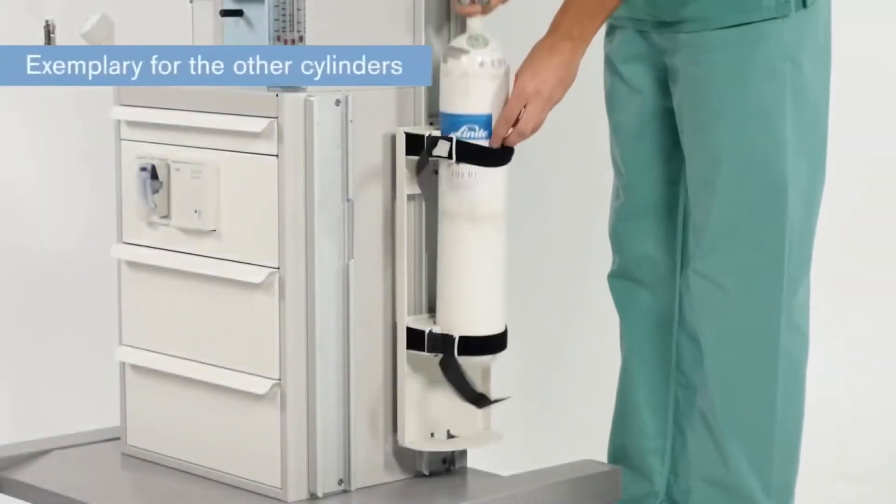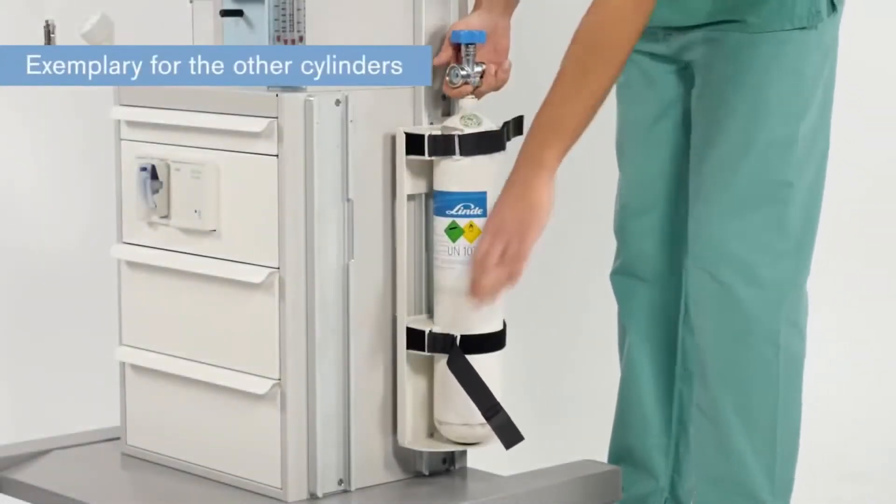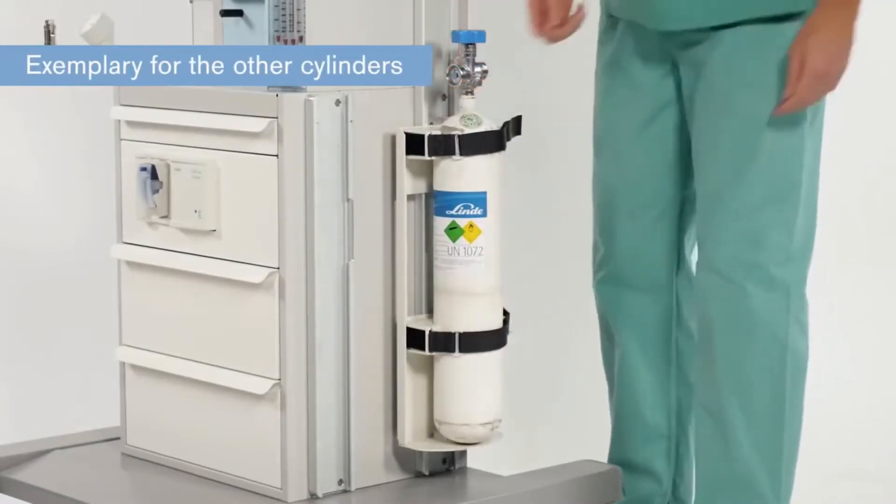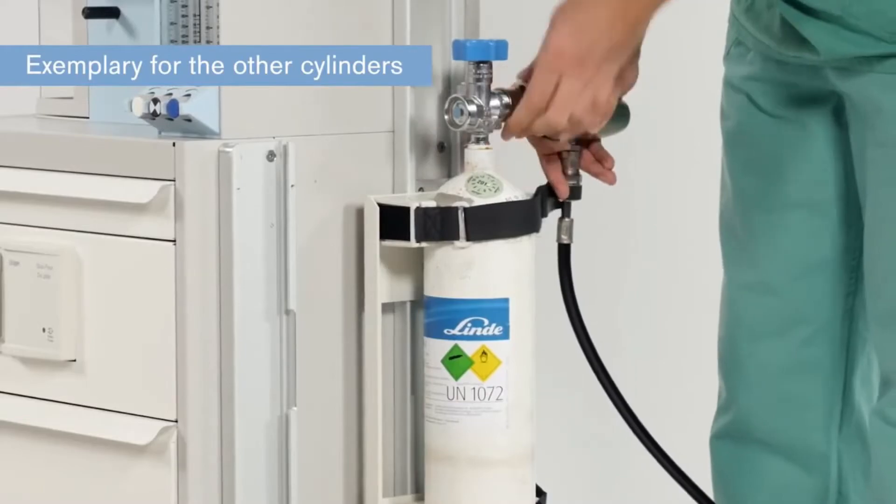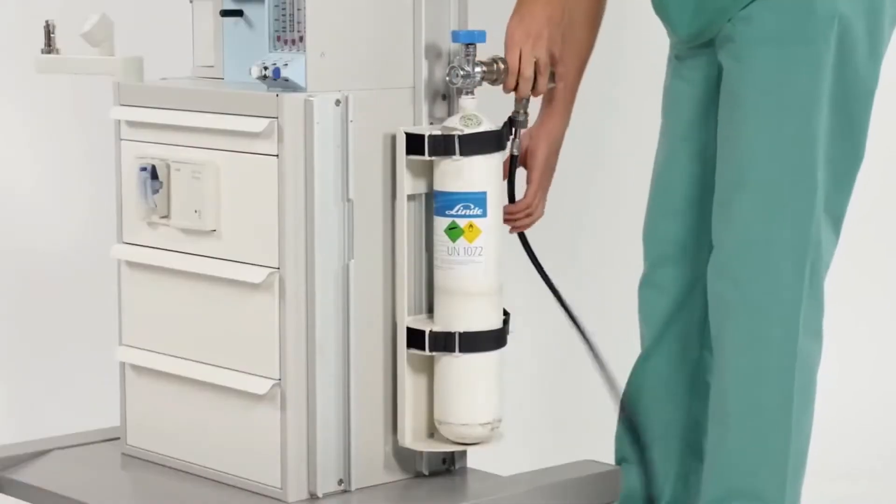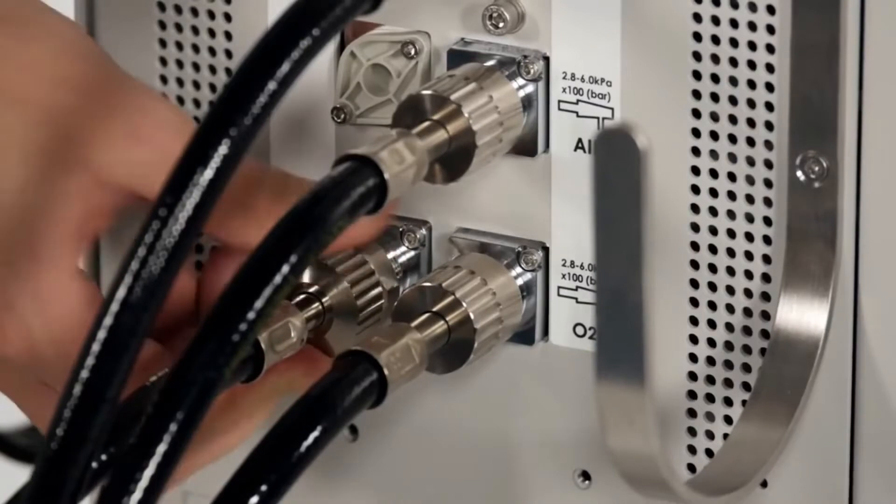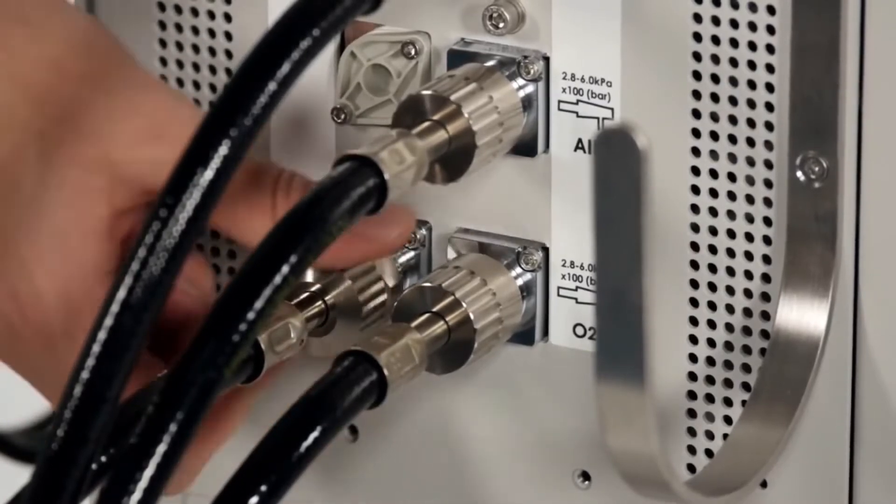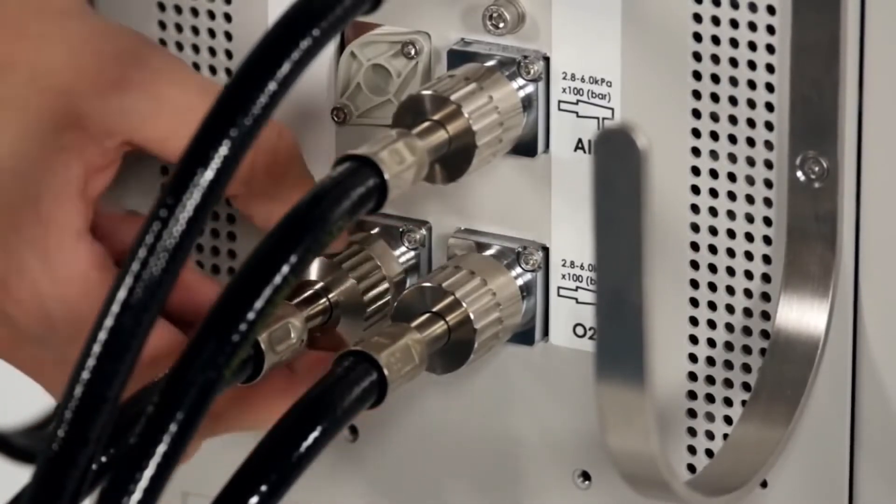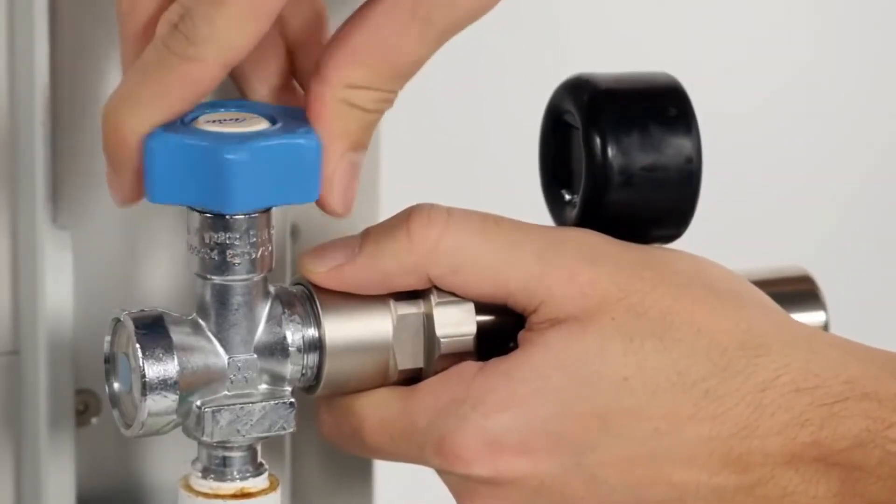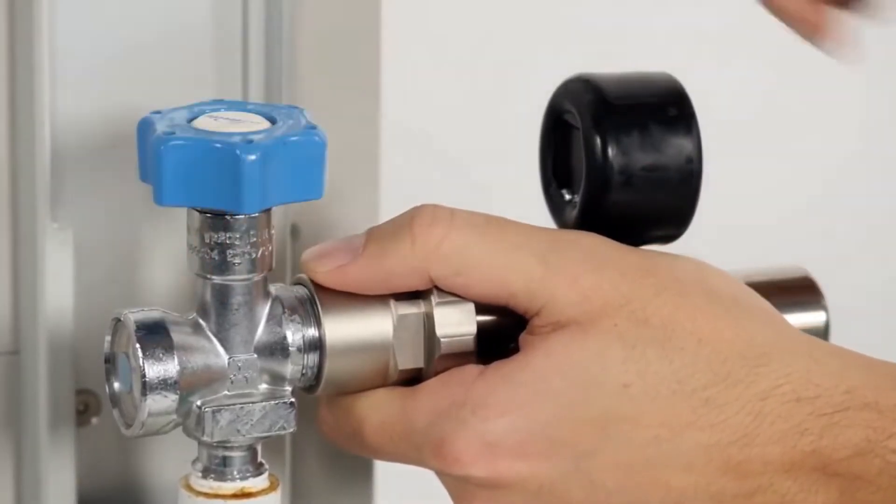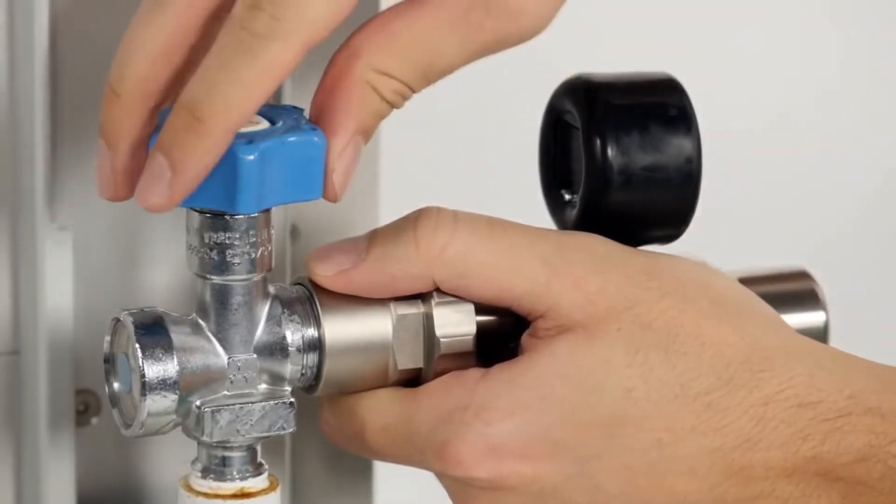Place the full cylinder in the cylinder holder and secure it in position. Screw the pressure regulator onto the cylinder valve. Screw the compressed gas hose to the pressure regulator and to the connection of the gas inlet block. Open the cylinder valve and check the pressure on the pressure reducer. Close the cylinder valve.